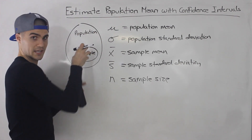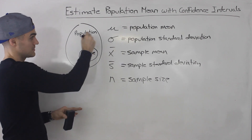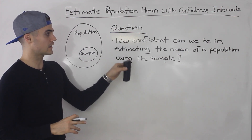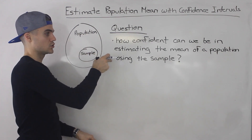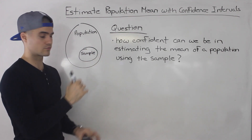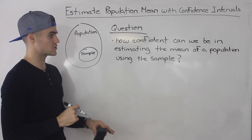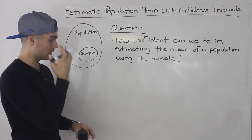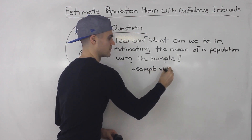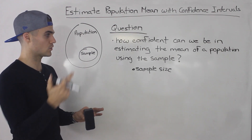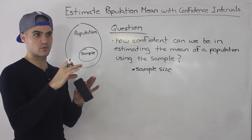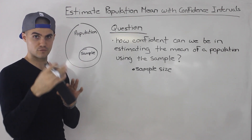So basically: population, we're taking a sample, and we're going to perform some stuff on the sample to try to get an estimate for the population mean. The main question to answer in this section is: how confident can we be in estimating the mean of a population using the sample? There's actually a bunch of factors. One obvious factor is the sample size — how big is the sample you're using? For example, if we're estimating the average money a person spends per day on food in Toronto, the population is 2.7 million people.